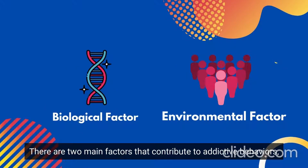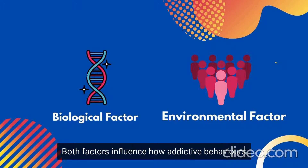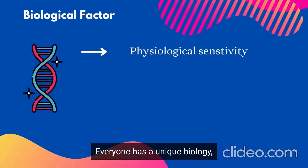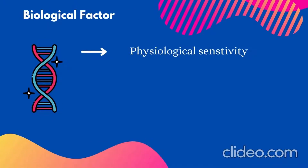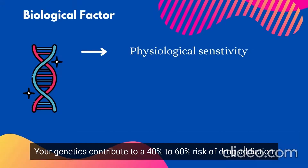There are two main factors that contribute to addictive behaviours: biological and environmental factors. Both factors influence how addictive behaviours are formed in children at an early age. Everyone has a unique biology, and their genes and physiological sensitivity to illicit substances plays an important role in their risk of becoming addicted and abusing substances.